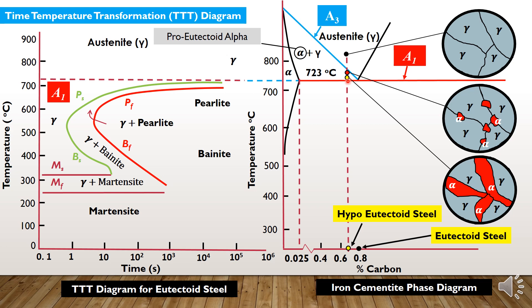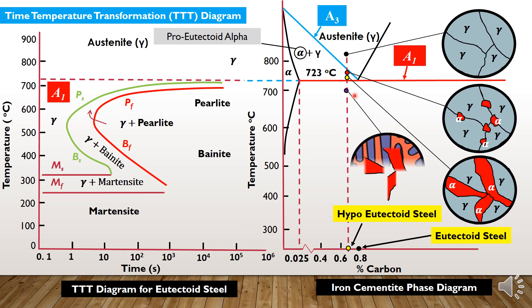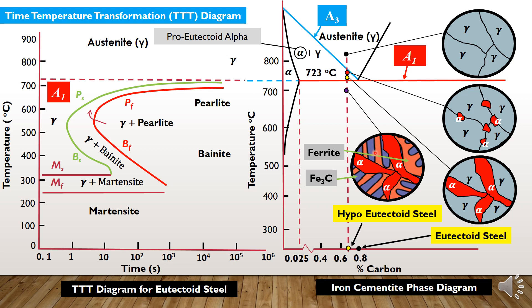Just above the lower critical temperature but still in the alpha plus gamma region, the fraction of pro-eutectoid alpha phase will increase. As the eutectoid temperature is reached, temperature will become constant and an invariant reaction called the eutectoid reaction will start, in which all the remaining austenite transforms into pearlite — a mixture of ferrite plus cementite. Below the eutectoid temperature, the microstructure consists of pro-eutectoid alpha plus pearlite.